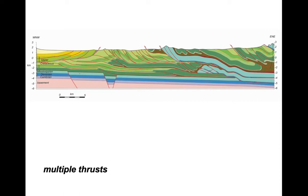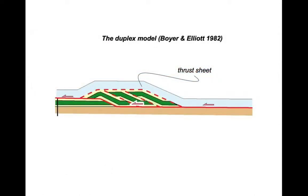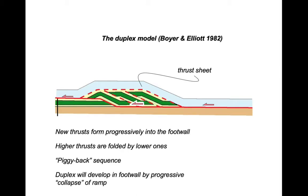Now let's go on and see how multiple thrusts work. The starting point for this is the duplex model, as published by Steve Boyer and Dave Elliott. It shows some stratigraphy stacked up by a series of thrusts beneath a major thrust sheet shown in light blue. In this model, new thrusts progressively form in the foot wall of previously active ones. As a consequence, higher thrusts are folded by these newer, lower thrusts, and because these higher thrusts have been carried, the overall sequence is generally referred to as piggyback. The duplex develops by the foot wall ramp progressively collapsing, accreting new rocks into the thrust system.